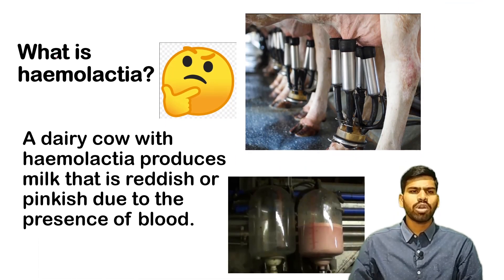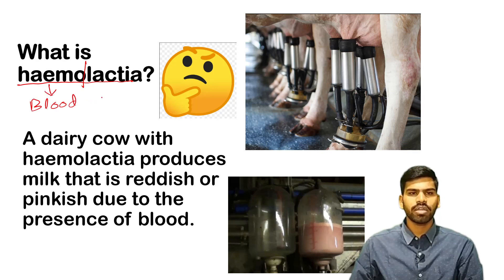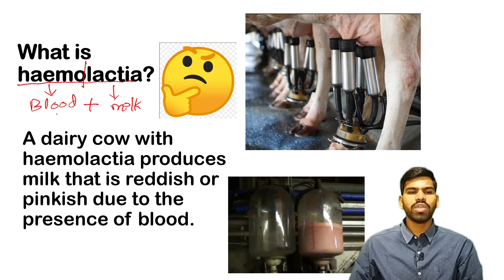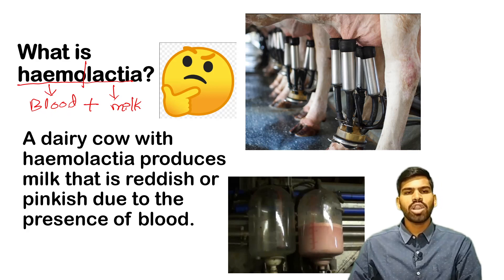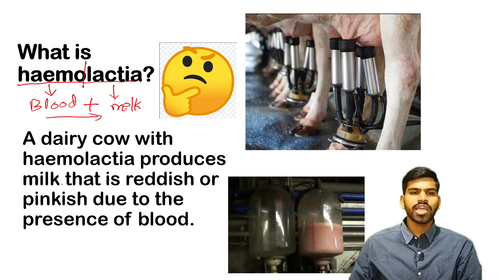What is Hemolactia? Split this word into two: first is 'Hemo' and then 'Lactia'. The meaning of Hemo is blood and Lactia is milk. By this we get the meaning of the word Hemolactia — it is the condition in which blood is present in milk. A dairy cow with Hemolactia produces milk that is reddish or pinkish due to the presence of blood.